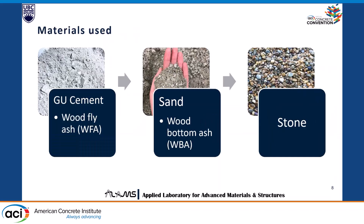In this study, the materials we used were ordinary Portland cement, which we replaced with wood fly ash because of it being more finely textured, at several percentages. We also used natural sand, which we replaced with wood bottom ash, and we used stone as the coarse aggregate.